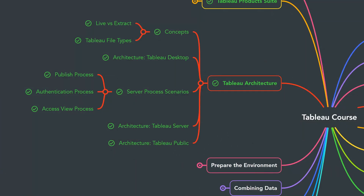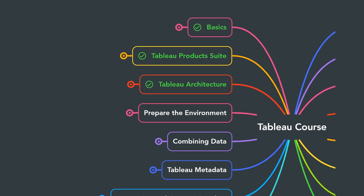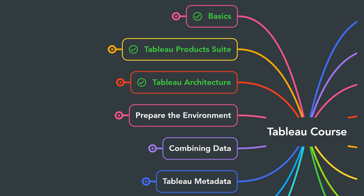I decided to use Tableau Public in this Tableau course since it's free and all of you can follow me with the examples without having to pay for extra licenses. The limitations we have in Tableau Public are not really relevant for the learning process. The main features of Tableau — the data visualizations we have in Tableau Desktop — are all available in Tableau Public without any limitations, so don't worry about it. With that, we have learned the Tableau architecture and its components, how Tableau internally works, and covered the theory parts of Tableau. In the next section, we will start preparing your environment so you can practice Tableau with me during the course.